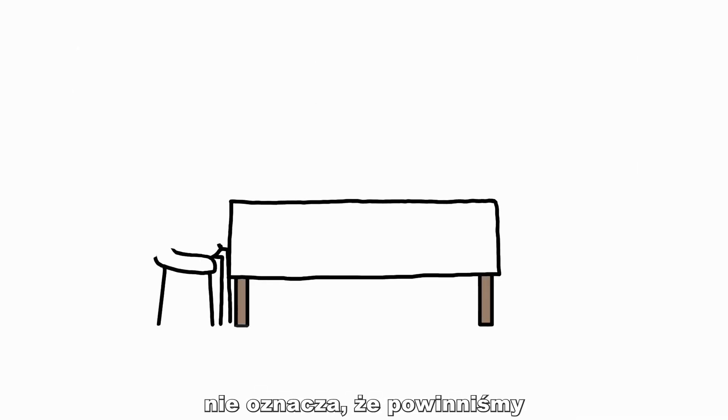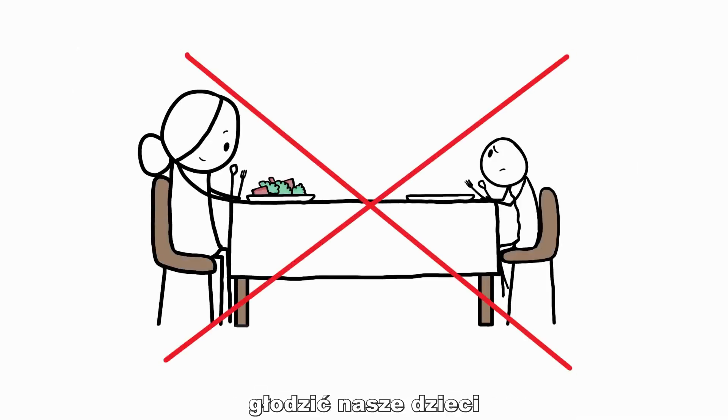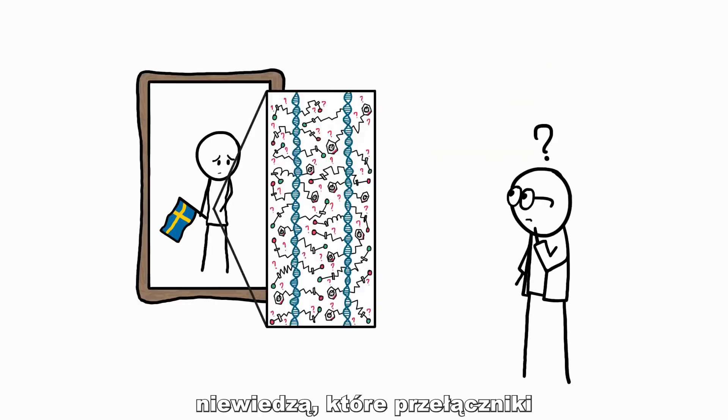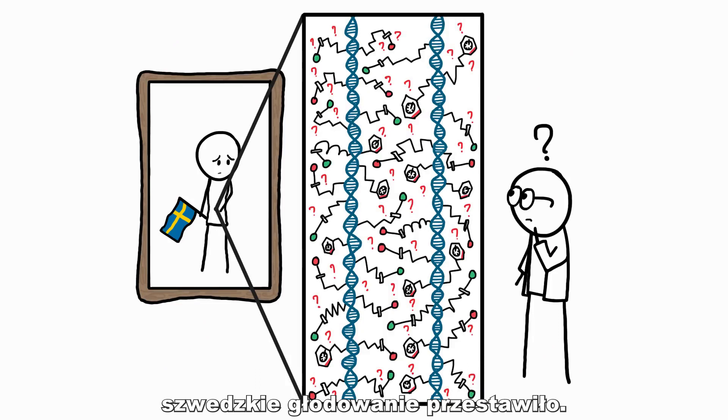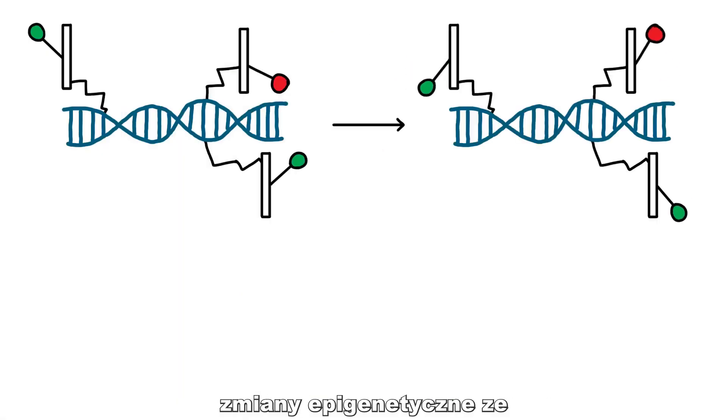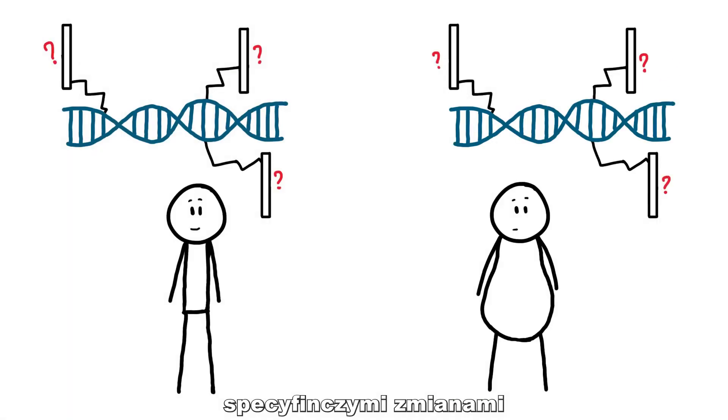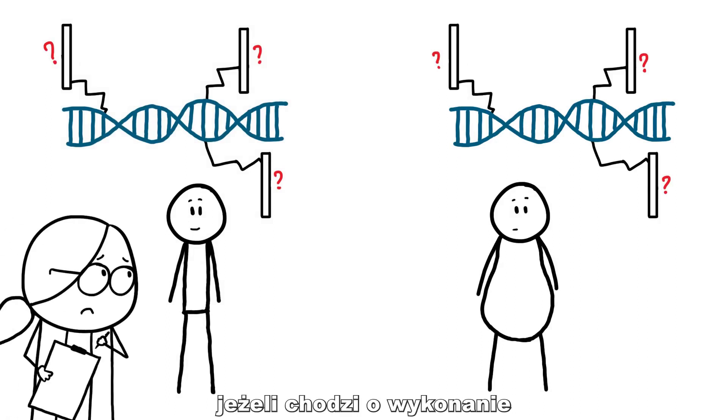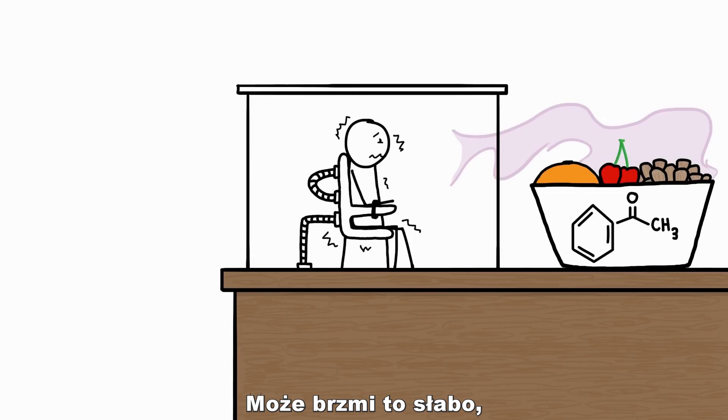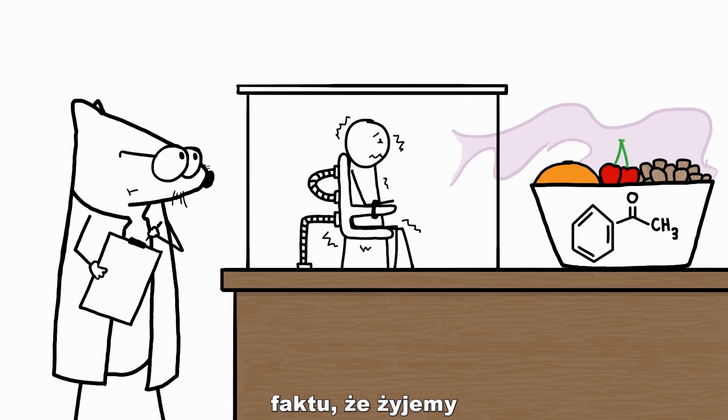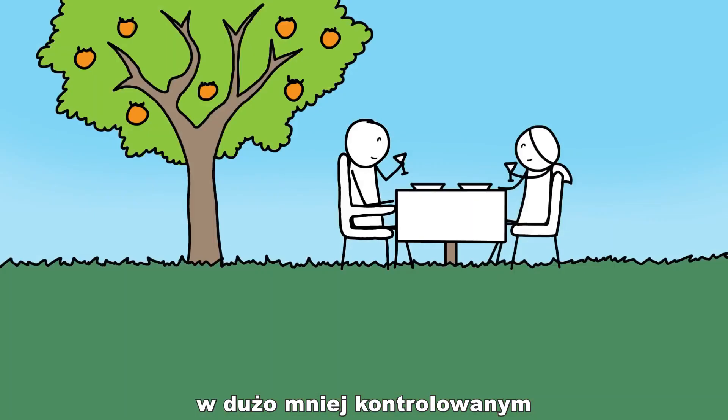To be clear, this does not mean that we should start starving our kids for the benefit of future generations. Scientists don't even know yet exactly which switches the Swedish famines flipped. While we have been able to connect specific epigenetic changes to health effects in mice, we're a long way off from being able to make those connections in humans. That may sound like a bummer, but it's mostly because we humans don't live in the well-controlled environment of a laboratory. And for that, we should be grateful.